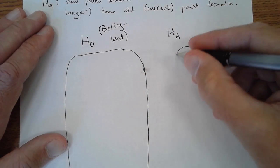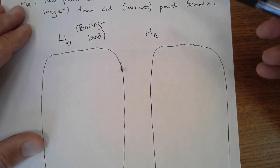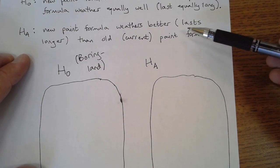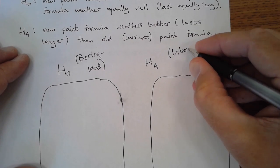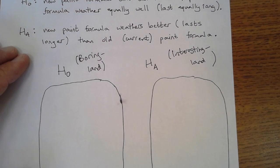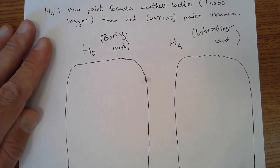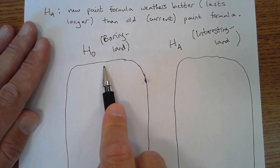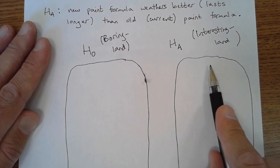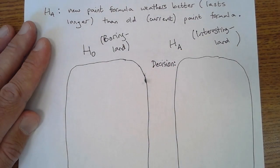On the other hand, we might live in a world where one of the paints really does much better than the other one. The alternative hypothesis states that if we happen to live in that world, then there's something interesting going on, and so in the video we've called this interesting land. The decision that we make after we've gathered data is going to be to try to decide which world we live in. Do we live in boring land, and really these two paints work just as well, or do we live in interesting land?